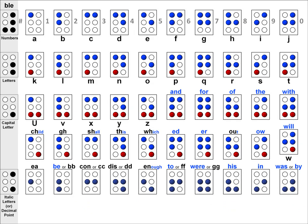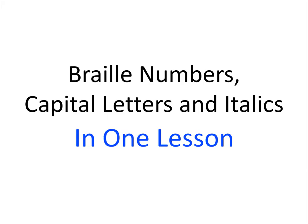So, let's add back the 50 cells that we learned about in the previous video. And now in the next video, we'll take a look at punctuation marks, as well as the other ten braille cells that we haven't looked at so far. So, this has been braille numbers, capital letters, and italics in one lesson.